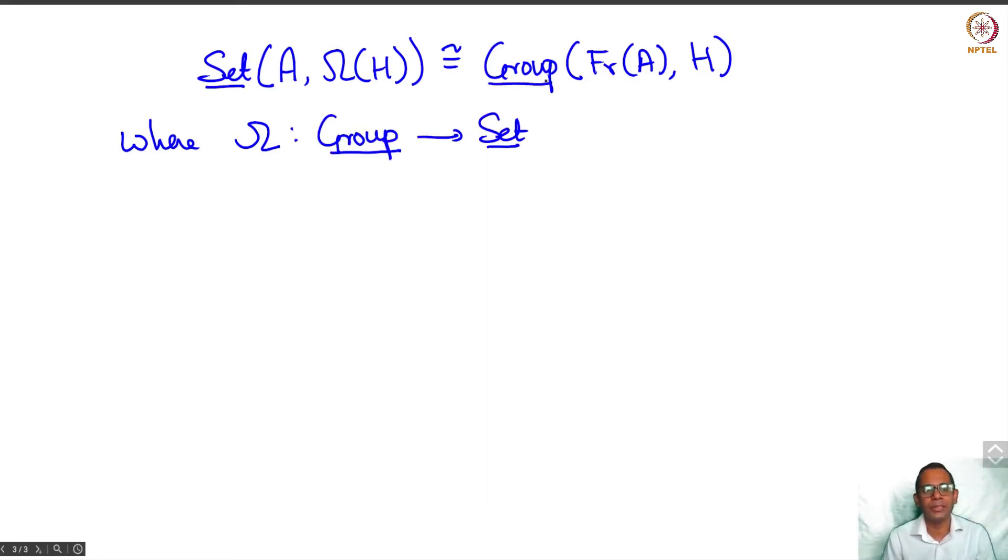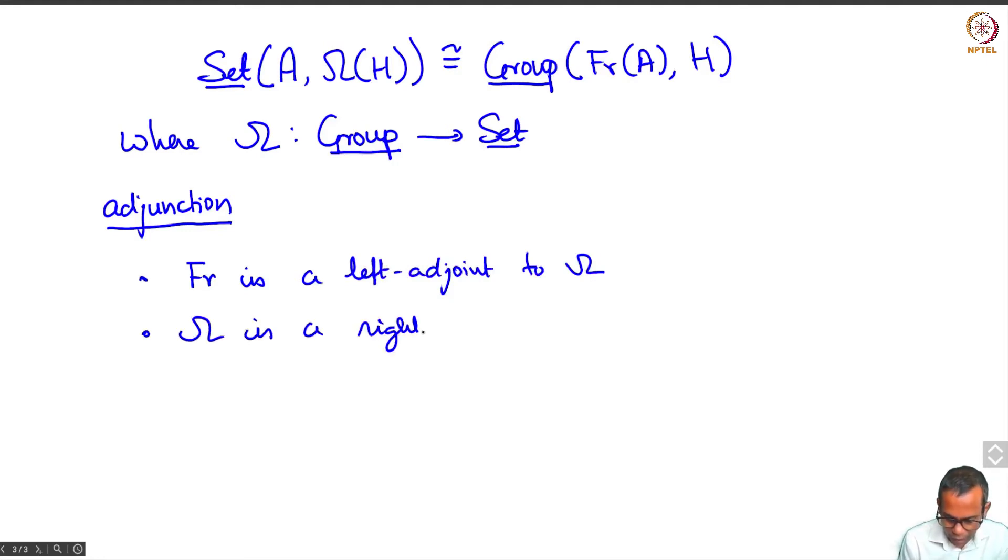Now this kind of situation is known as a junction. What we say is that Fr is left adjoint to omega. Or we may say that omega is a right adjoint to Fr. Or we may say that Fr, omega is an adjoint pair of functors. Okay. So here note that Fr occurs on the left and omega occurs on the right.